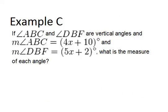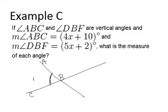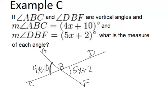Let's finish with example C. Example C says if angle ABC and angle DBF are vertical angles, and the measure of angle ABC is 4X plus 10, and the measure of angle DBF is 5X plus 2, what is the measure of each angle? Let's draw a picture to visualize this. We have angle ABC equal to 4X plus 10, and angle DBF equal to 5X plus 2, and they are vertical angles. Since vertical angles are always congruent, we set up the equation: 4X plus 10 equals 5X plus 2.